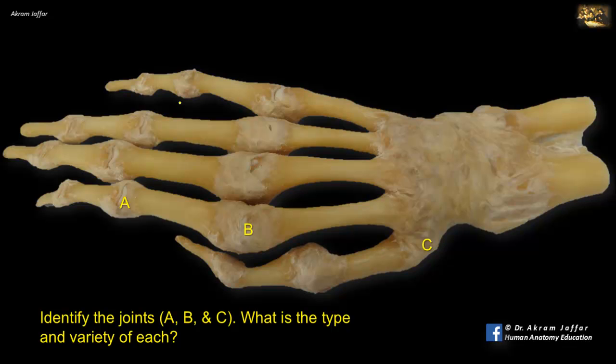Identify the joints A, B, and C. What is the type and variety of each? All are synovial joints, allowing a considerable degree of movement. A is a proximal interphalangeal joint. It is a hinge variety, allowing flexion-extension movements only. B is a metacarpophalangeal joint. It is a condyloid variety of synovial joint, allowing flexion-extension on one axis and adduction-abduction on a second axis. So it is a biaxial joint.